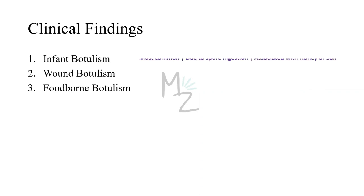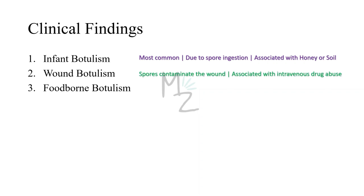Infant botulism is the most common type, resulting from spore ingestion via honey or soil. Affected infants develop weakness or paralysis and may require respiratory support, though mortality is lower than expected. Wound botulism occurs when spores contaminate a wound, germinate, produce toxin at the site, which then reaches the blood and peripheral nervous system — mainly associated with intravenous drug abuse. Foodborne botulism results from ingestion of preformed toxin, associated with canned foods such as tuna fish or vacuum-packed foods.